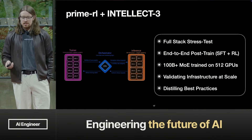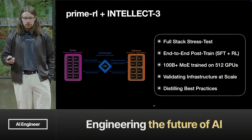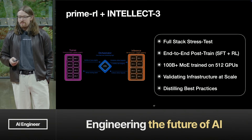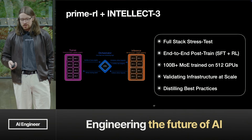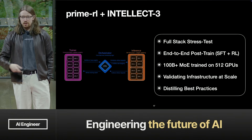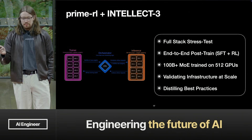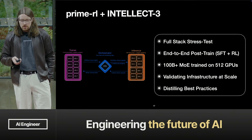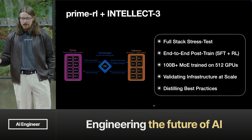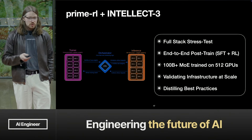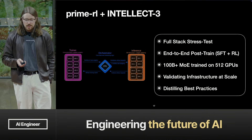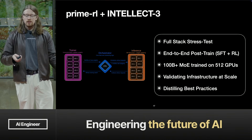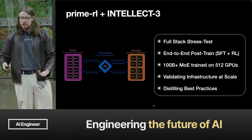To fully stress-test this, we've been training a large model called Intellect 3, which will be out into the world quite soon, with our full Prime RL stack. This has been us really validating the efficiency and performance at very large scale — a 100B+ model trained on 500 GPUs, doing end-to-end post-training of SFT and RL. It's also been about understanding all the best practices: we read papers, try out all the tricks, see which ones work and which don't, and then distill this into the Prime RL library so it can be consumed by end-users without needing to do all the implementation themselves.